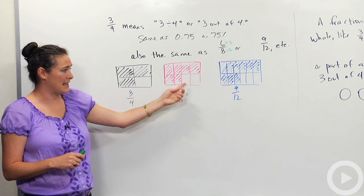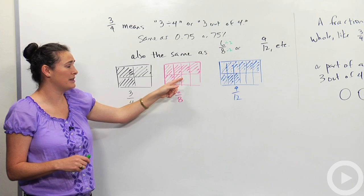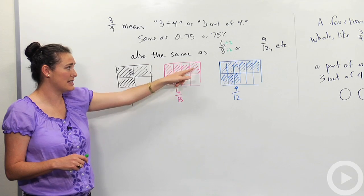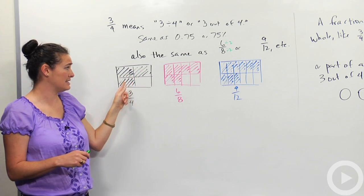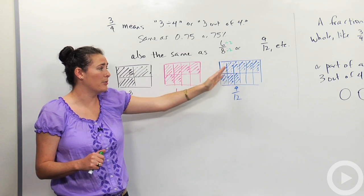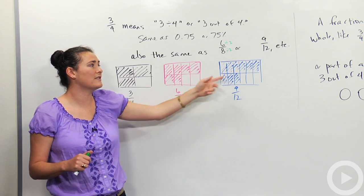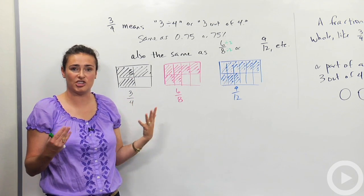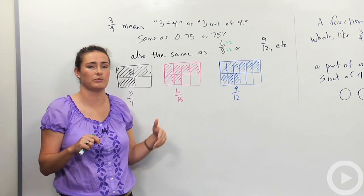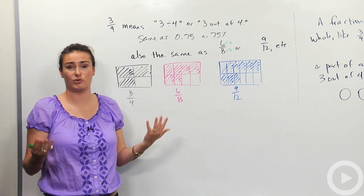And you can hopefully see it's the same as 6 eighths. This is supposed to be the same size rectangle, pretty darn close. But now this rectangle is split up into 8 pieces, and I shaded 6 of them. And you can see this pink shaded area is the same as the black shaded area. And same with this third rectangle over here, the blue one. I broke this one into 12 equal sized pieces and shaded 9 of them. So all 3 of these pictures have the same shaded area. The colored in black part is the same as the colored in pink, same as the colored in blue. To show that those fractions, again, are the same value, just written in different forms.